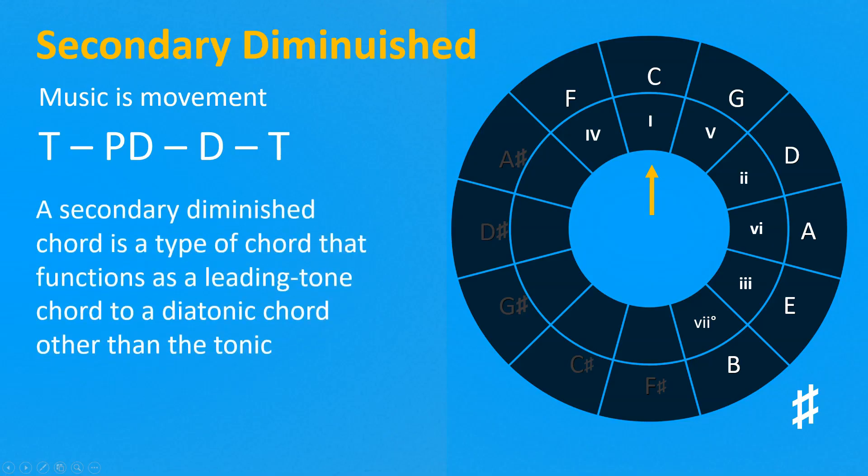A secondary diminished chord is a type of chord that functions as a leading tone chord to a diatonic chord other than the tonic. Let's take a C major scale, and we want to go to A minor. We can do that by introducing some tension, as we have seen with the secondary dominant E7, that is the fifth of the A minor scale, or if you prefer, the fifth of the sixth of the C major scale. Or we can do that by introducing a different tension with the secondary diminished chord G sharp diminished, that is the seventh of the A major scale, or if you prefer, the seventh of the sixth of the C major scale.